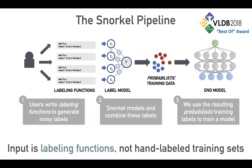The next thing we do is model the noise in each of these labeling functions and combine the labels from them in an optimal manner to create probabilistic training labels for our data. The main thing to keep in mind for steps one and two is we're not using any ground truth data. All we've done is codified our common sense into these rules and applied them to the data.